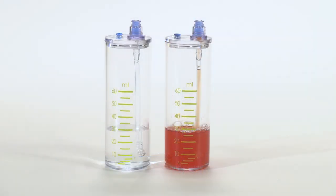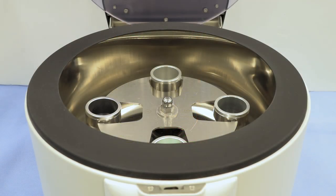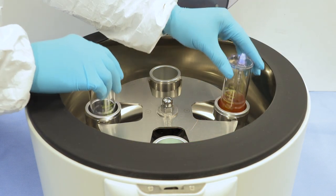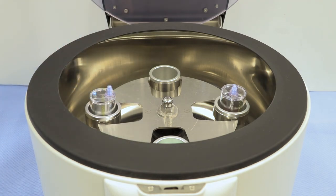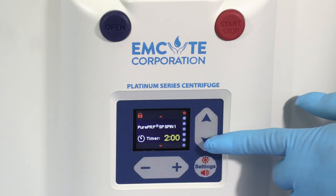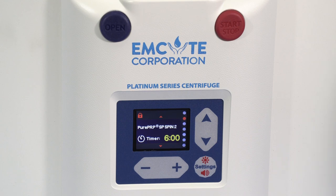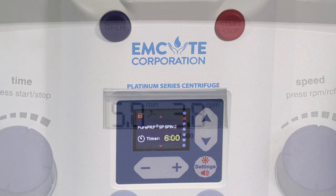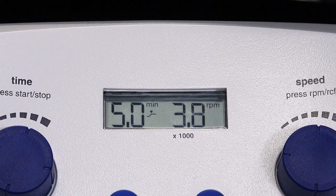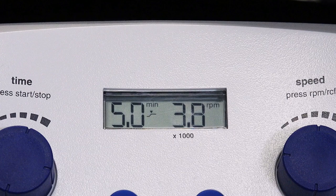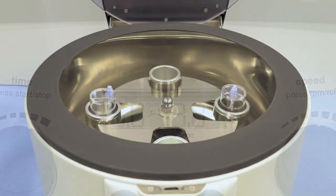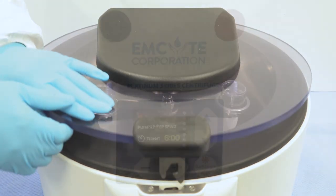Counterbalance the accessory with equal volume and place back into the centrifuge rotor at opposite ends. Set the Platinum Series Centrifuge at Pure PRP SP Spin 2. Set the Executive Series Centrifuge for 5 minutes and 3800 RPMs. Close the centrifuge lid and press Start.